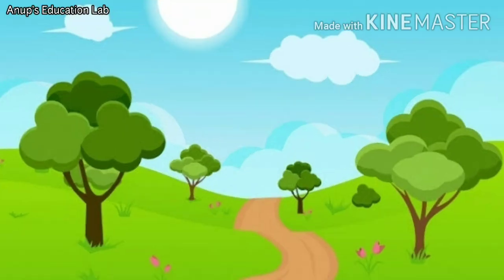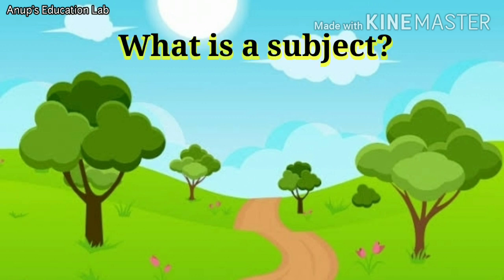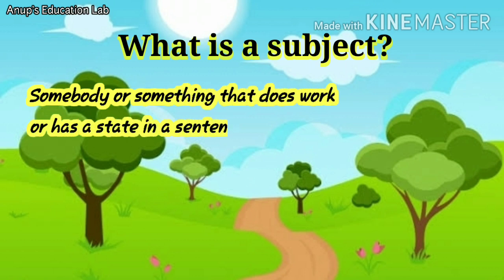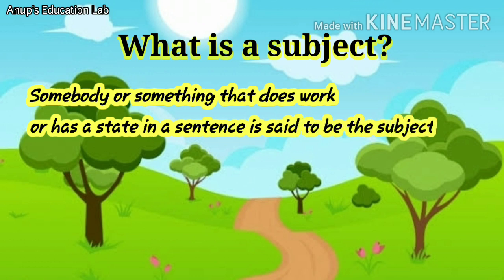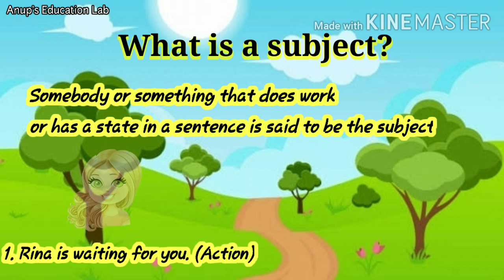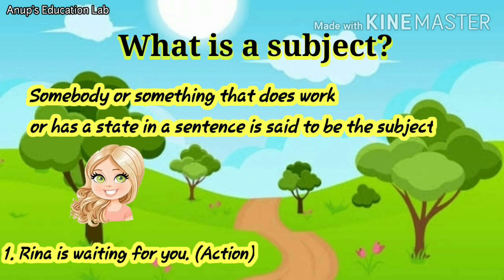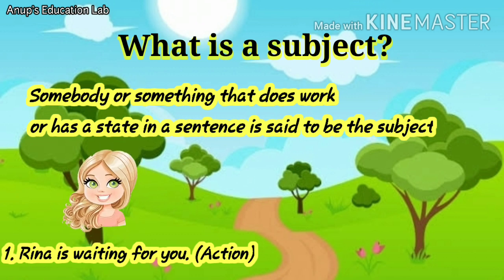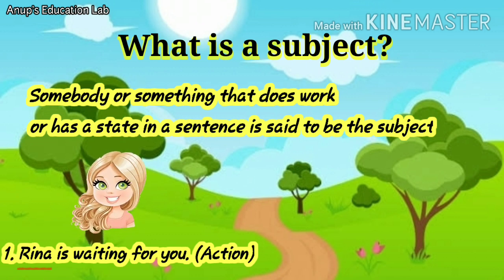Let us try to understand subject first. So students, what is the subject? Somebody or something that does the work or has a state in a sentence is said to be the subject of that sentence. Now, let us have a look at few examples. Reena is waiting for you. This sentence tells us what Reena is doing. She is doing the action of waiting. So, here, Reena becomes the subject because she is doing an action.